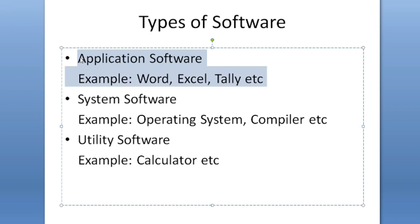Application software means whatever software can be used for doing a particular complete work. If any software completes your task fully, that is application software. For example, software that maintains all your accounts like Tally, or if you want to write documents and letters, you use MS Word or OpenOffice Writer. Similarly, Excel and PowerPoint are also application software.